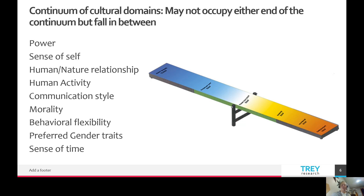Morality on one side of the continuum relates to a sense of what's right versus an obligation — I need to do this, I'm told I have to do this. One side is led by right and wrong; the other is led by duty. Behavioral flexibility: on one side are people who are a little more flexible with their behaviors and can tolerate risky behaviors; on the other side is more conservative behavior where they follow the rules and have much more structure to how they act.